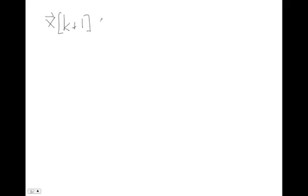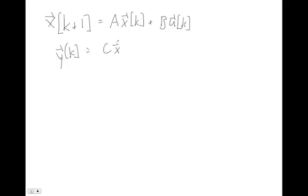In the continuous time video, we saw that the impulse response of a system was very important, and it will be in this case as well. Our impulse response is a little bit different now. For discrete systems, we're evaluating our system at the next step as a linear combination of the states at step k, plus the inputs at step k. Our output y at step k is always equal to some linear combination of our states and inputs. We're going to be interested in the impulse response of such a system.